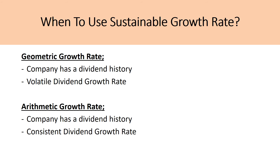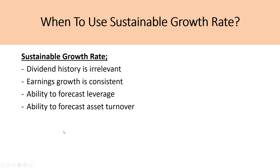So when do we use the sustainable growth rate? Quick summary: for the geometric growth rate, you need a dividend history and volatile dividend growth. For the arithmetic average growth rate, the company must also have a dividend history, but it needs consistent dividend growth. For the sustainable growth rate, dividend history is irrelevant — we're looking forward, and the three important things we need to understand are consistent earnings growth, our ability to forecast the company's leverage, and our ability to forecast the company's asset turnover.